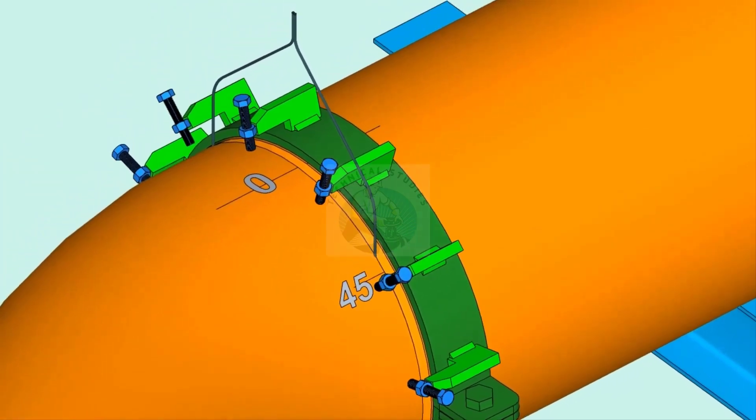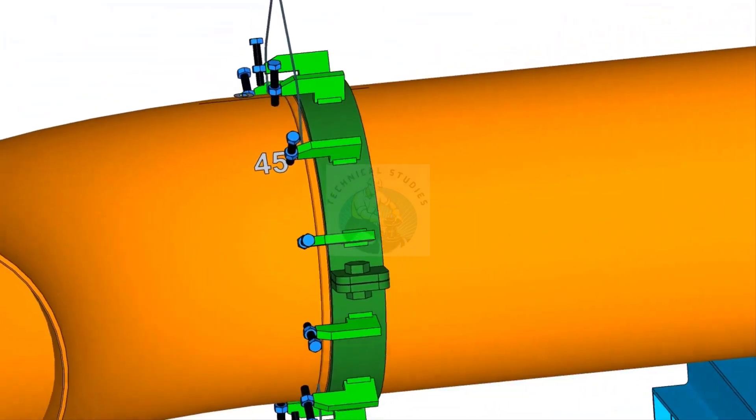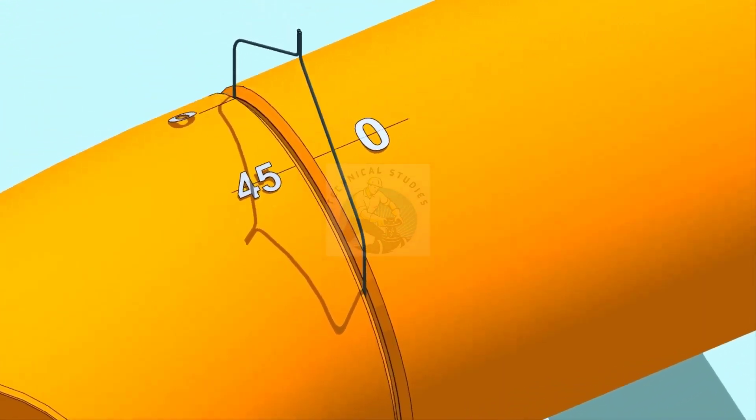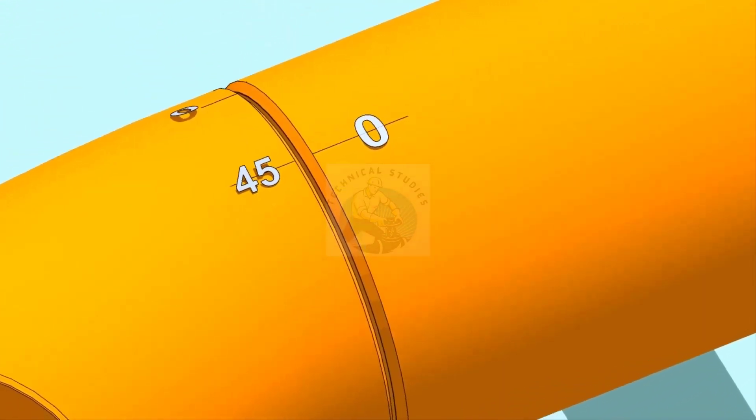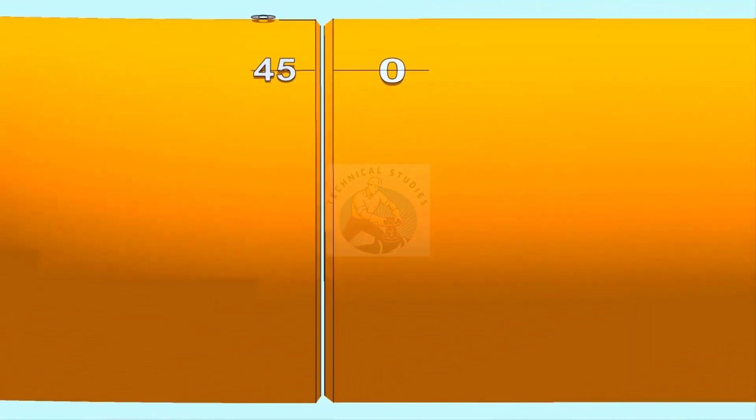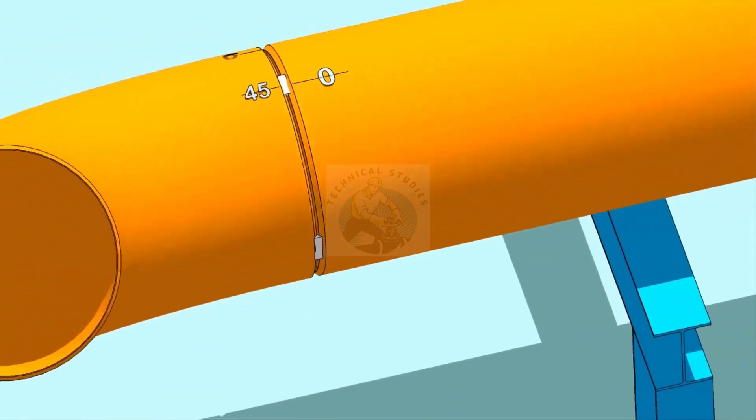Now slowly rotate the elbow until the 45-degree mark comes opposite to the 0 mark on the pipe. Make the joint gap equal all around the joint. Tack weld at the four quarters of the joint.